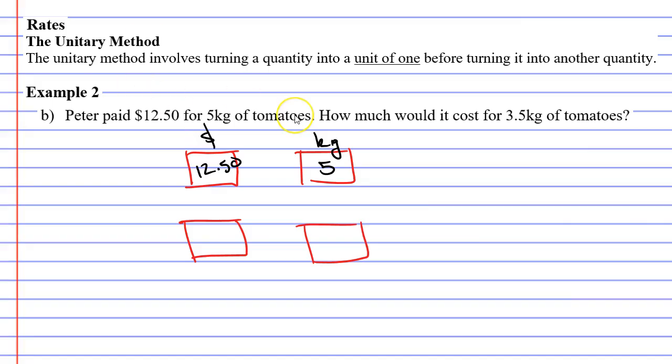Here we're going to talk about the unitary method where we turn a quantity into a unit of 1. We're going to convert our 5 kilograms into 1 by dividing it by 5, which means we need to do the same on the left side. We're going to divide $12.50 by 5. What do we get? 2.5, so $2.50 for 1 kilogram of tomatoes. When this happens, we're going to draw another two boxes.